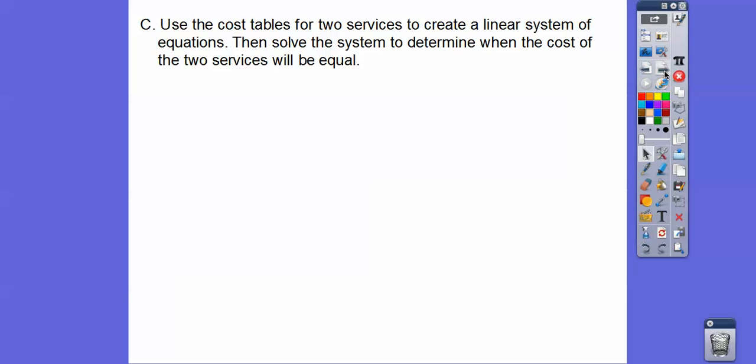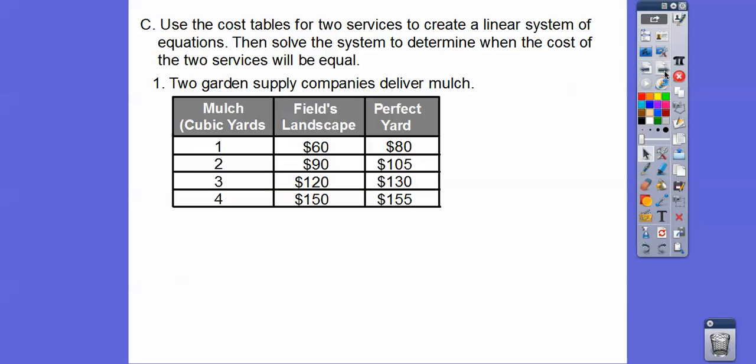So use the cost tables for the two services to create a linear system of equations and then solve the system to determine when the cost of the two services will be equal. Then they give us a table right here. And then the two garden companies, supply companies, deliver mulch. So here's Fields Landscaping. They charge this much for how many cubic yards. And Perfect Yards charges this much for how many cubic yards. So can you see these ordered pairs right here? 1, 60, 2, 90, and then 3, 120, 4, 150.